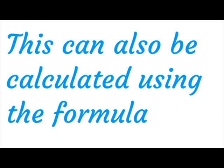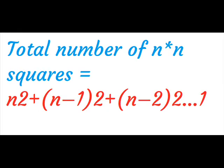This can also be calculated using the formula. Total number of n into n squares is equal to n square plus n minus 1 the whole square plus n minus 2 the whole square up to 1.